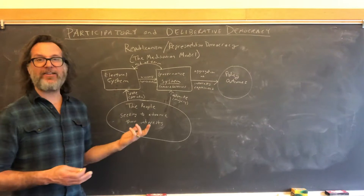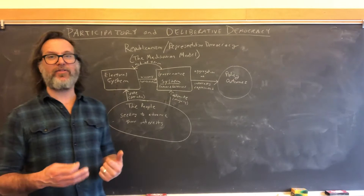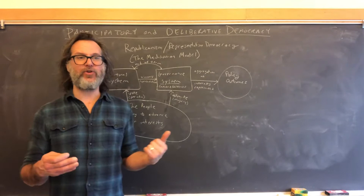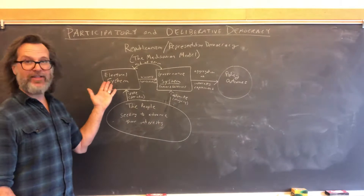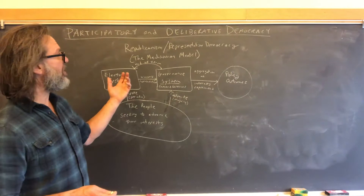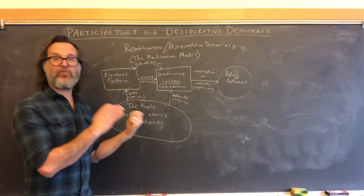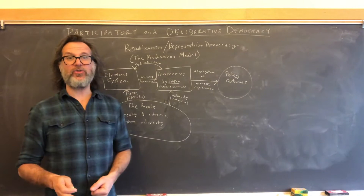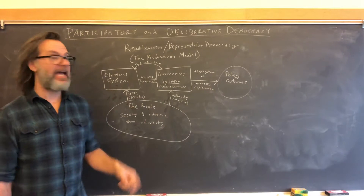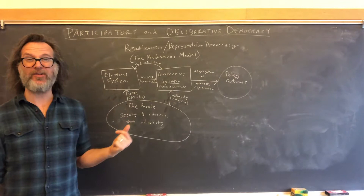Madison is the most prominent American advocate of the notion that democratic politics is essentially a struggle among interest groups — he called them factions — to advance their interests through the mechanisms of government. The relationship between the people and these two systems is relatively narrow in the Madisonian model. Part of the idea of republicanism is that the people don't have a very vigorous presence in the overall system. They are off to the side. Their two essential influence points are voting and advocacy, and voting is periodic — sporadic, even.